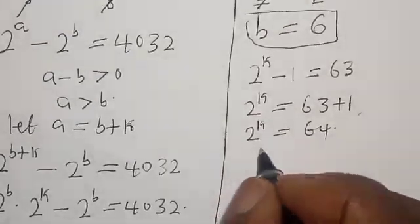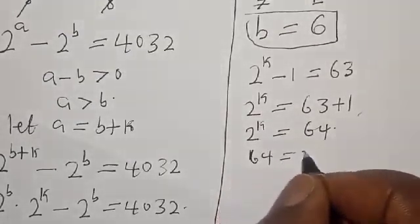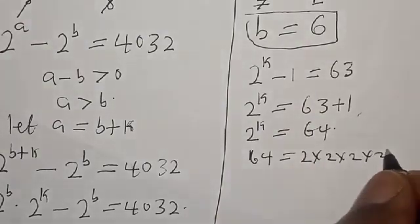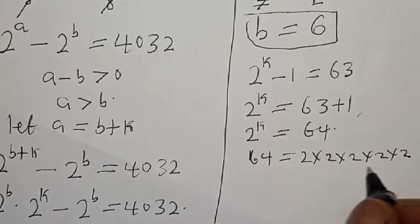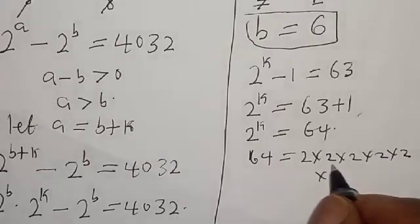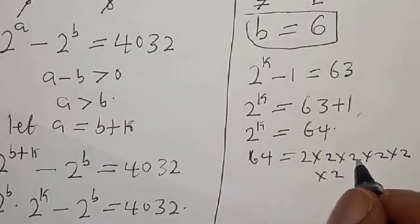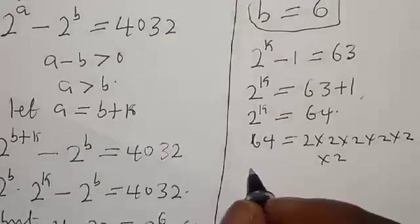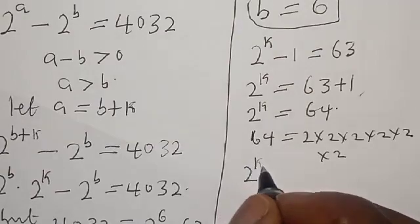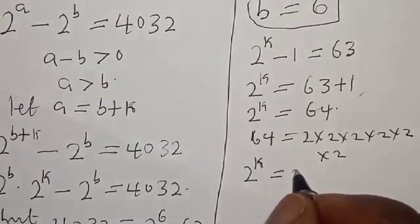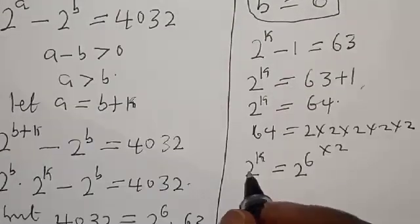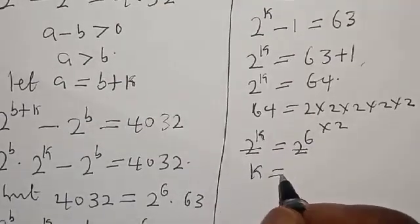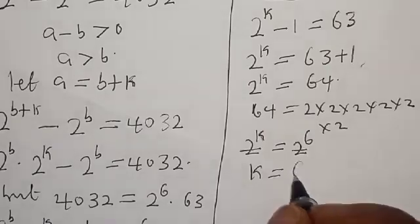Now 64 can be expressed as 2 raised to power 6. Therefore we have 2 raised to power k equal to 2 raised to power 6. Since we have the same base, this gives us k equal to 6.